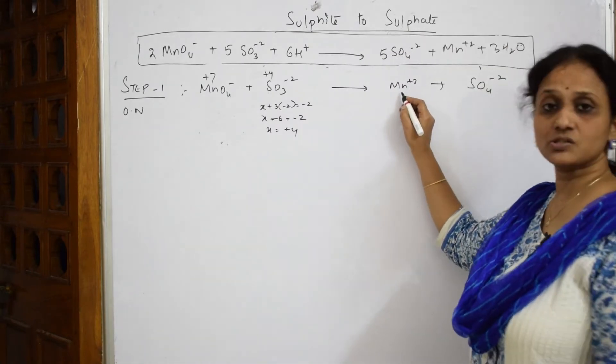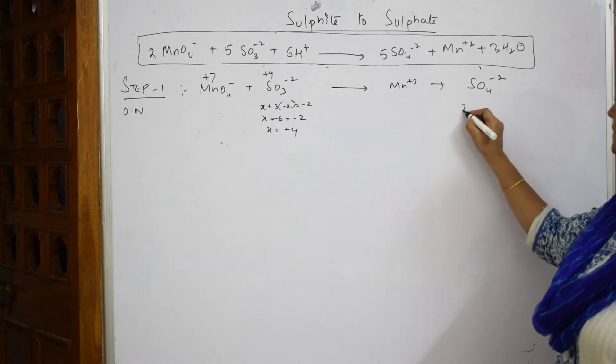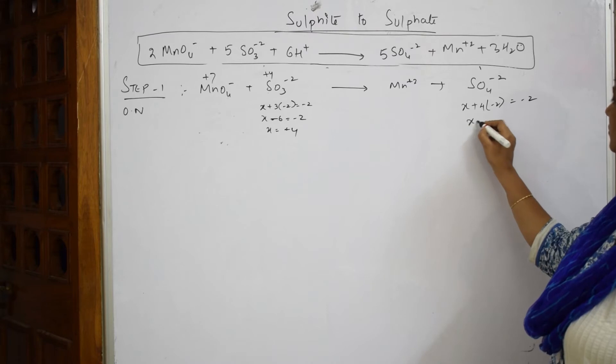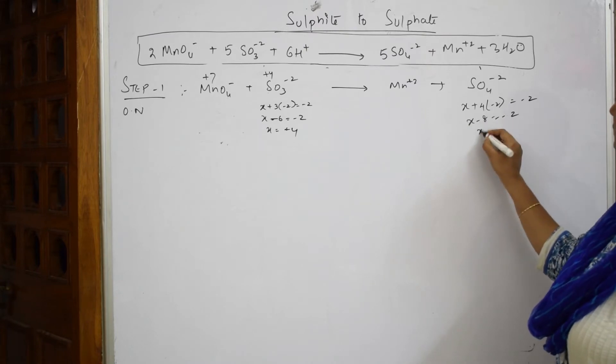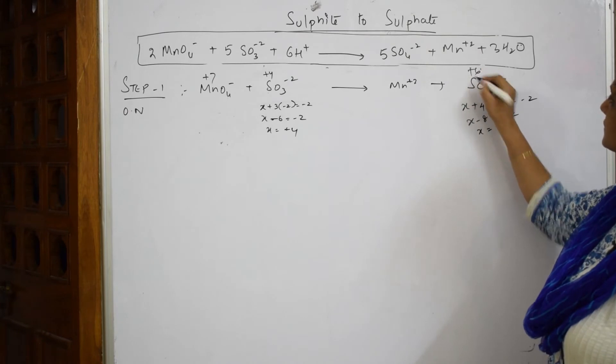Let us come back. Here manganese is already plus 2. Now I have to calculate for this sulfur. X plus 4 times minus 2. Here I have got valency of sulfur as plus 6.